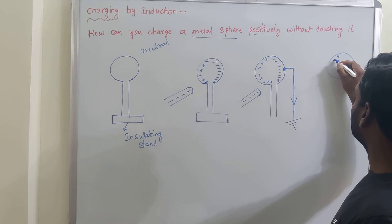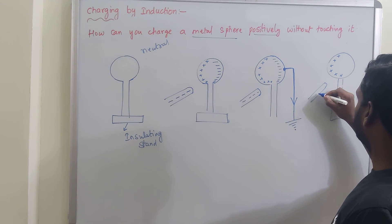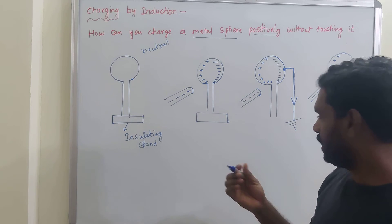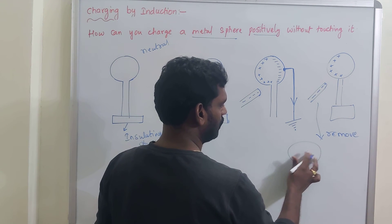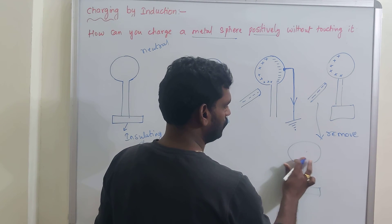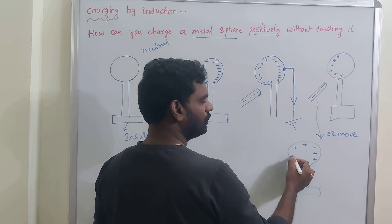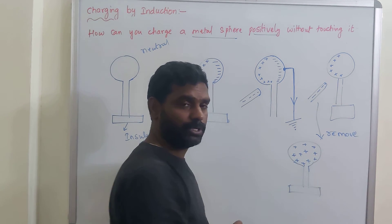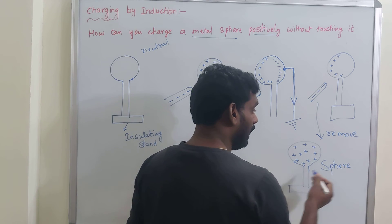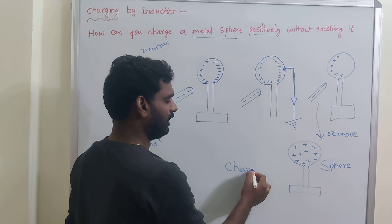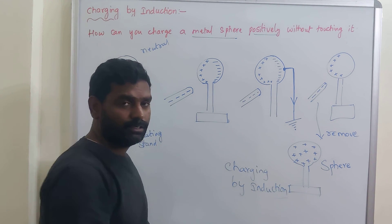After removing the earth connection, you will see positive charges remaining on the sphere while the negatively charged plastic rod is still near it. Now remove the plastic rod as well. When the plastic rod is removed, these positive charges redistribute throughout the entire sphere. That means the sphere is now positively charged by induction. This is another example of charging by induction. Thank you, students.